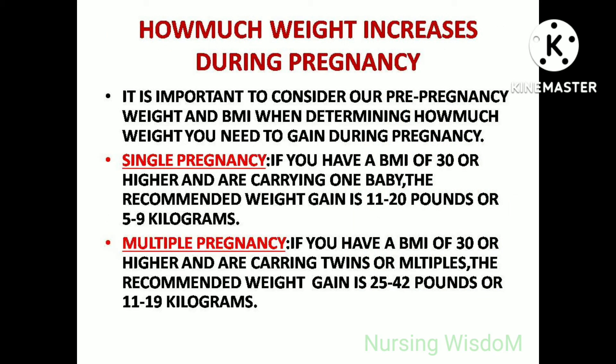Regarding how much weight should be gained during pregnancy: it is important to consider your pre-pregnancy weight and BMI. For a single pregnancy, if you have a BMI of 30 or higher and are carrying one baby, the recommended weight gain is 11 to 20 pounds or 5 to 9 kilograms. For multiple pregnancy, if carrying twins or multiples, the recommended weight gain is 25 to 42 pounds or 11 to 19 kilograms.